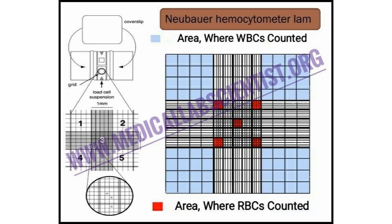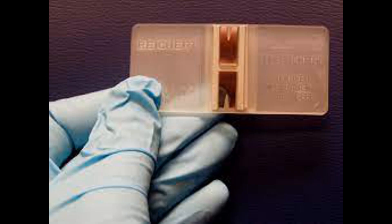A hemocytometer is a specialized laboratory device used for manually counting the number of cells in a fluid sample, typically in a controlled volume.